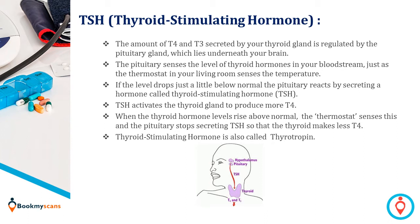When the thyroid hormone levels rise above normal, the thermostat senses this and the pituitary gland stops secreting thyroid stimulating hormone, so that the thyroid makes less T4. Thyroid stimulating hormone is also called thyrotropin.